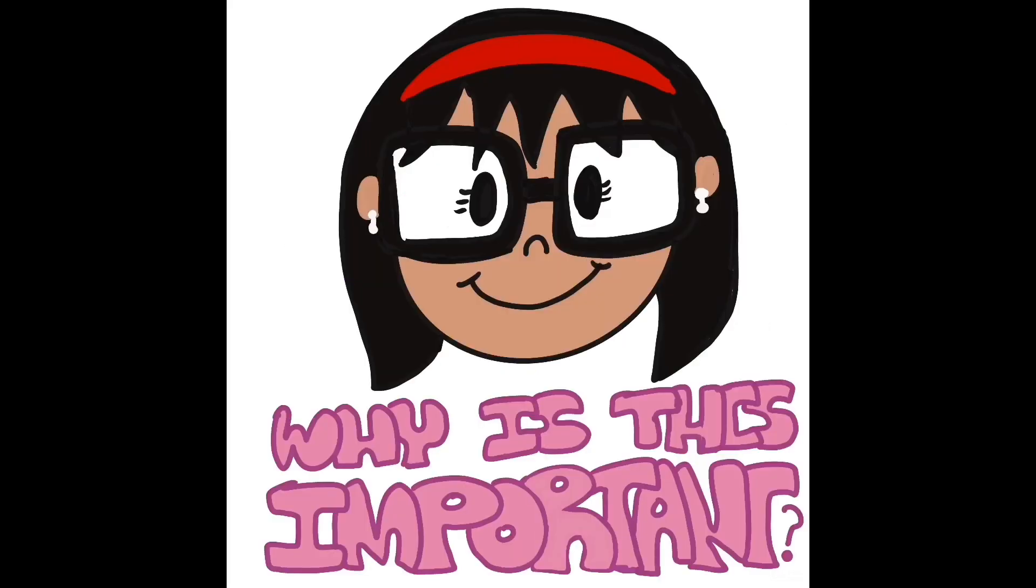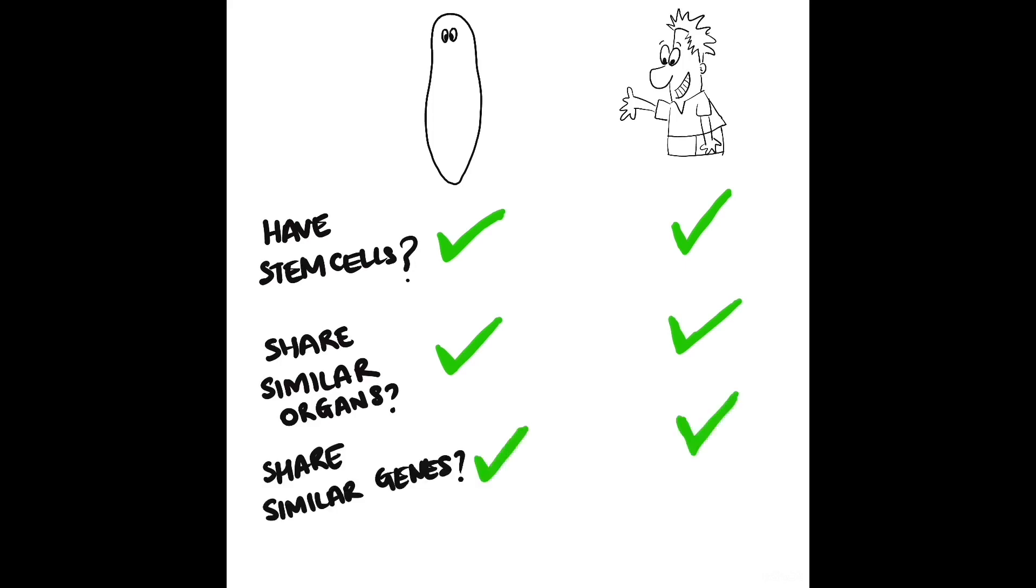So why is this important? This is important because, like planarians, humans do have stem cells, and we share a number of similar organs and similar genes. And yet, unlike planarians, our stem cells are nowhere near as adept at responding to injury.